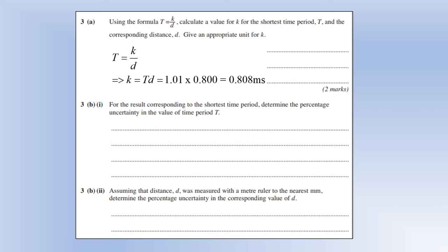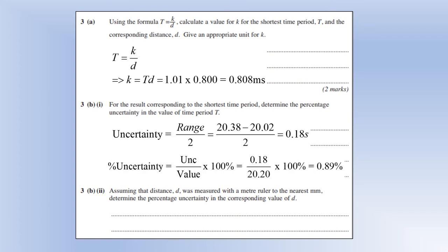So for the results corresponding to the shortest time period, determine the percentage uncertainty in the value of time period t. So what we're actually going to find is the percentage uncertainty in the time for 20 oscillations, because that's actually what we measured. So first of all, the uncertainty is the biggest repeat reading minus the smallest repeat reading, giving us an uncertainty of 0.18 seconds in the time for 20 oscillations. The value would be the average time for 20 oscillations, so that's what I've calculated, and it comes out 20.20, giving us a percentage uncertainty of 0.89%.